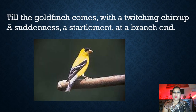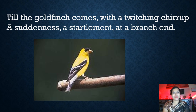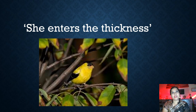Now let's look at the first two lines of stanza two. The bird goldfinch comes and perches on the tree — it sits at the branch end, as you can see in the picture, at the very edge of the branch. It comes with a chirping sound, very excited. It comes suddenly — its movement is very sudden — and it causes a startlement because you are not expecting it, and all of a sudden it is there. Then it perches at the branch end.